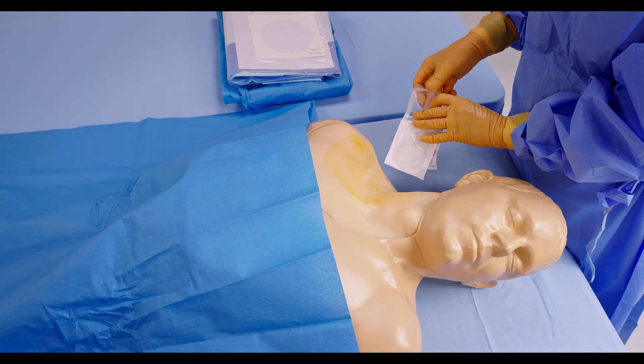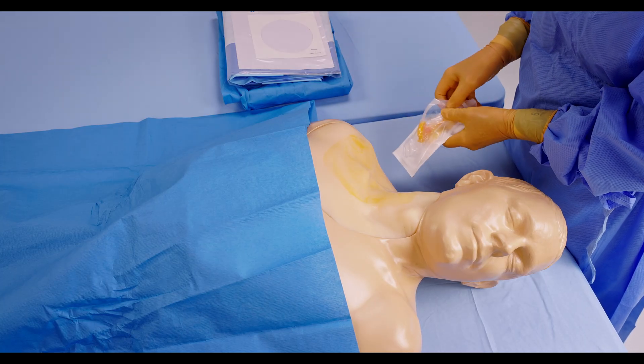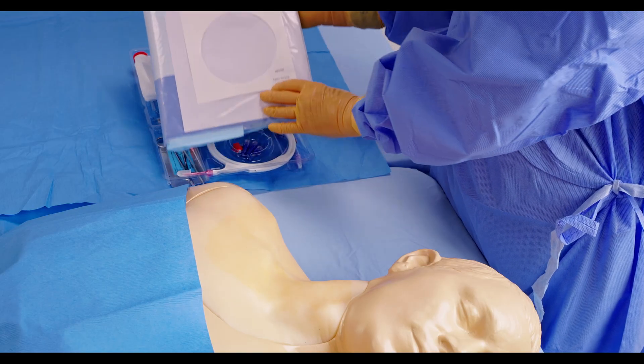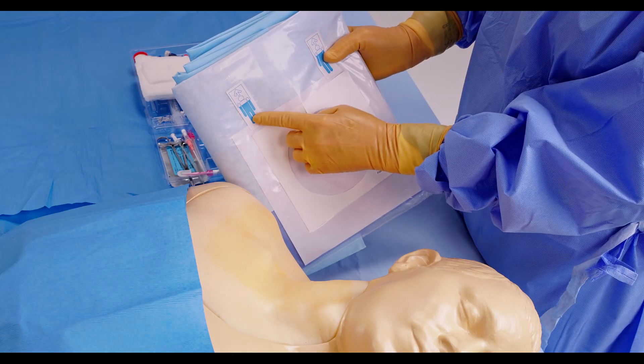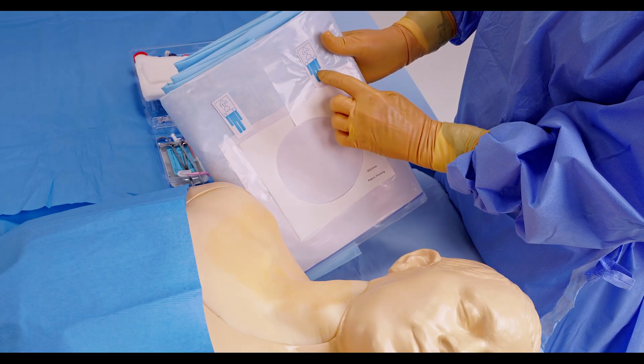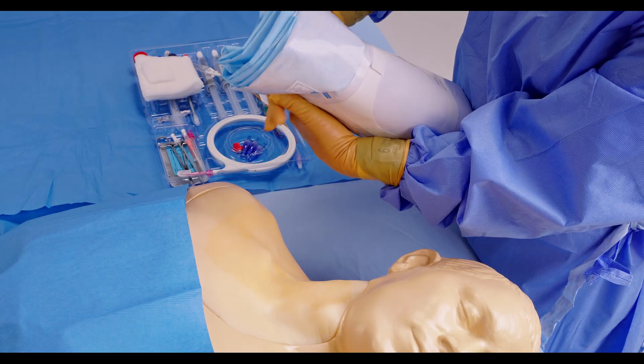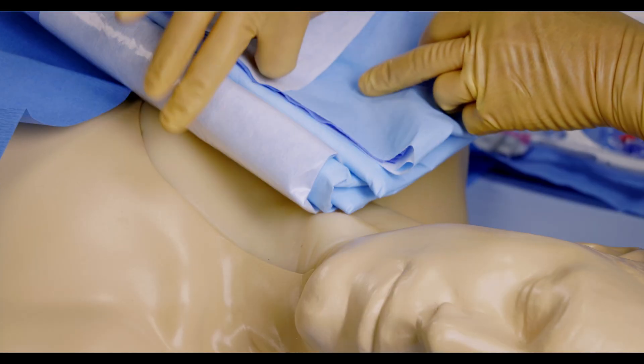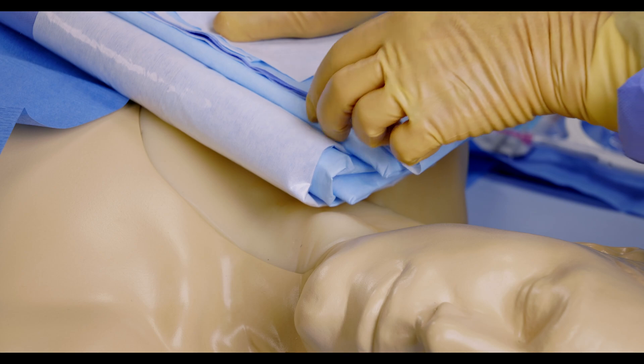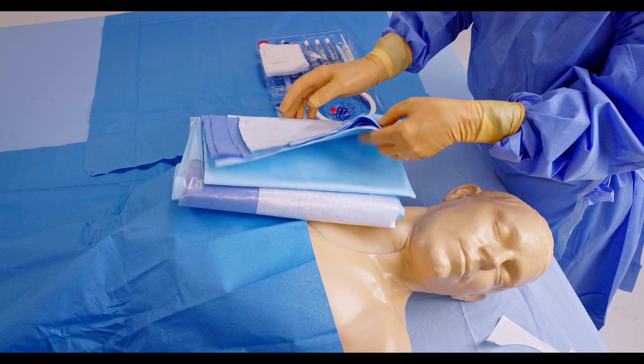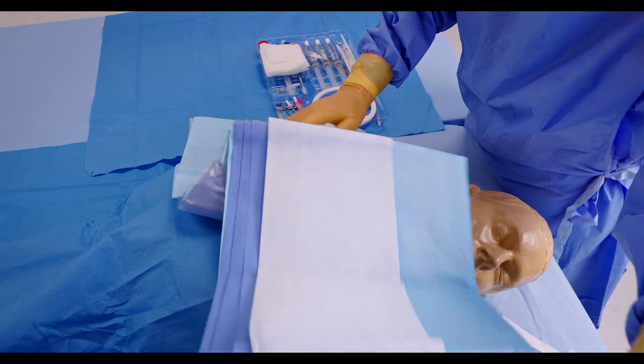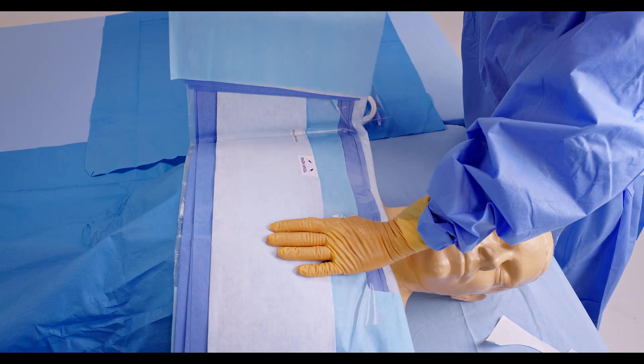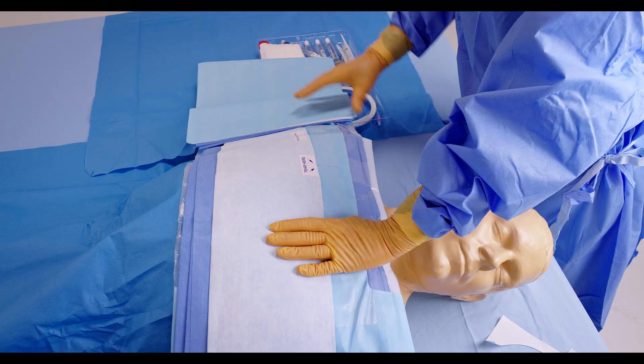Once the site is adequately disinfected and dry, proceed to apply the full-body fenestrated drape to establish a sterile field. Using visual indicators, unfold the full-body drape carefully, ensuring the sterile side faces the patient. Align the fenestration over the insertion site and smooth the drape outward from the center to eliminate wrinkles and secure adherence.